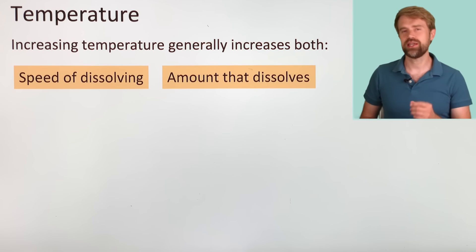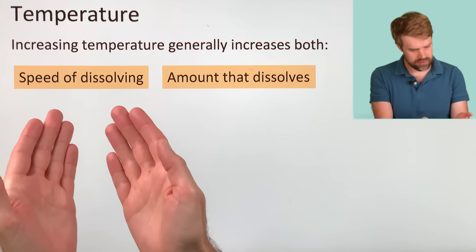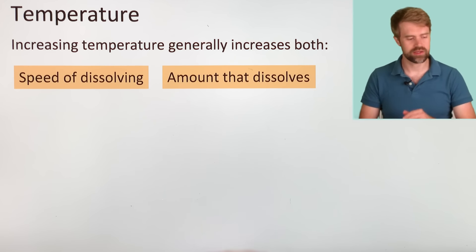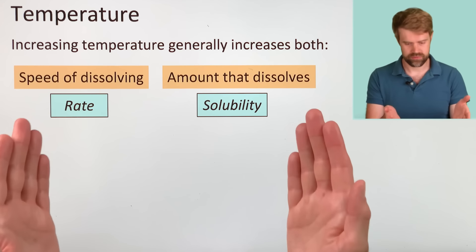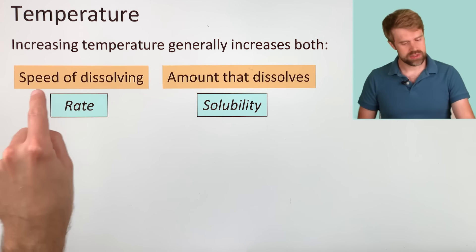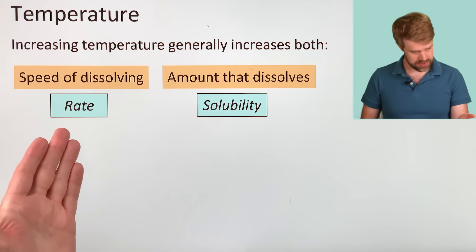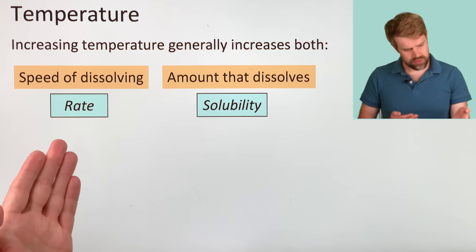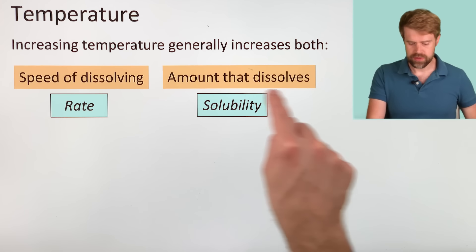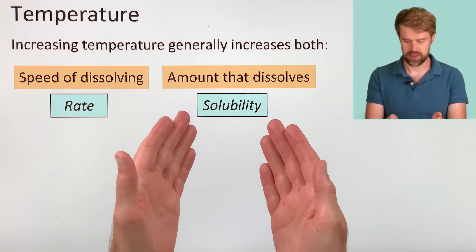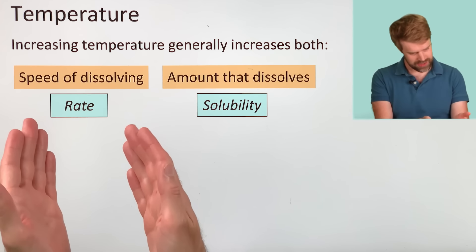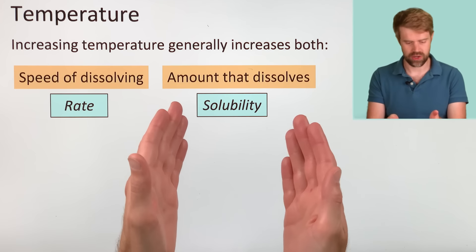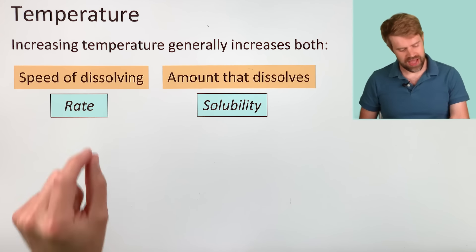Now, it's important to take just a minute and mention the difference between the speed that something dissolves and the amount that can dissolve. Increasing the temperature affects both of these. It increases the speed of dissolving, which we call the rate, and it also increases the amount that dissolves, which we call the solubility. But don't confuse these two. Rate has nothing to do with how much can dissolve, only how fast it can dissolve.